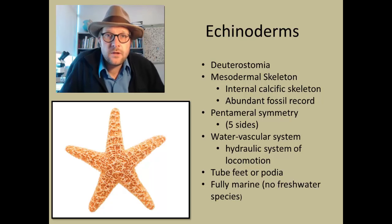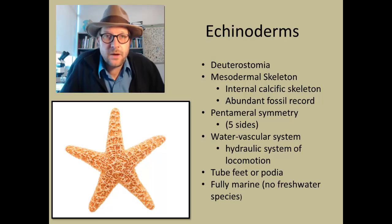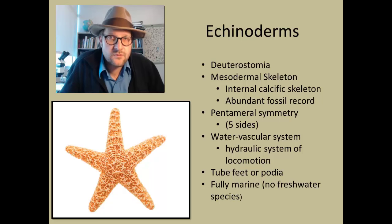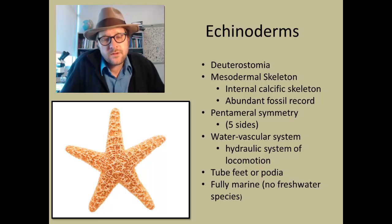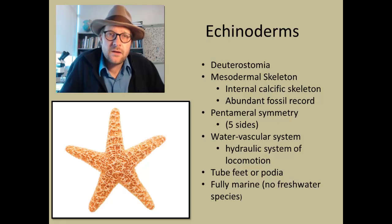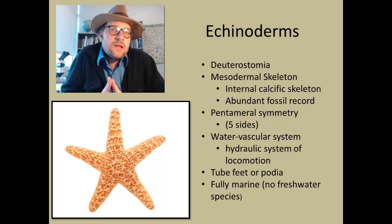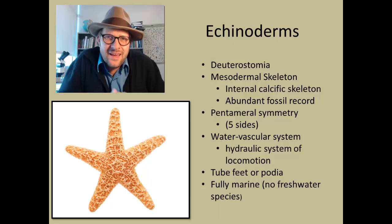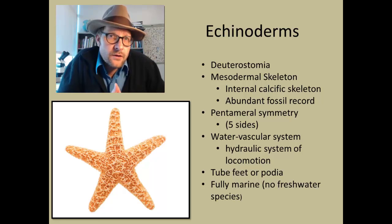Echinoderms exhibit a mesodermal skeleton of porous calcite that can be covered by spiny skin. Many exhibit a five-point, or pentamere, symmetry, with other groups exhibiting a more bilateral symmetry. This unique five-point symmetry is found in many fossil groups and is a good way to recognize this group in the fossil record.